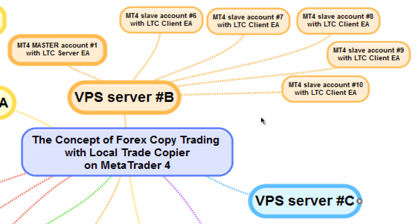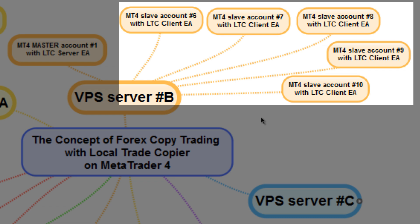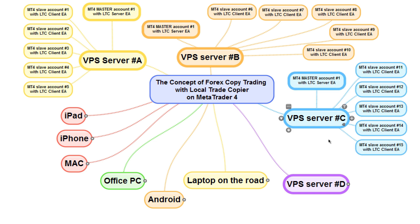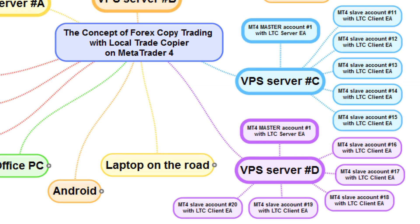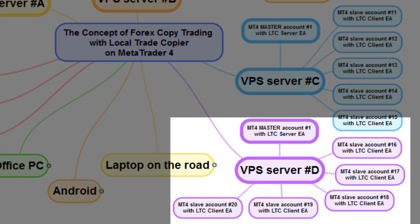VPS Server B has the same master account number one running with the Server EA attached, plus another five MetaTrader slave accounts — numbers six through ten — so this second group of five clients also has trades replicated from the same master account number one. Similarly, VPS Server C has client accounts 11 through 15, and VPS Server D has client accounts 16 through 20.